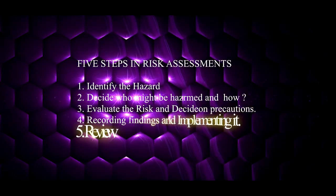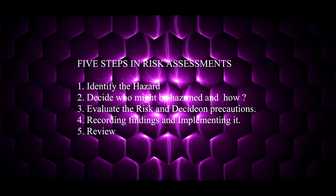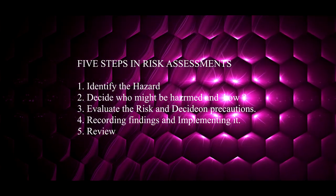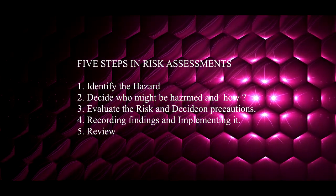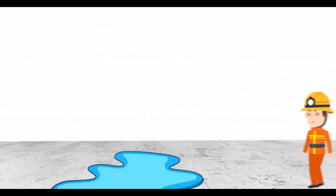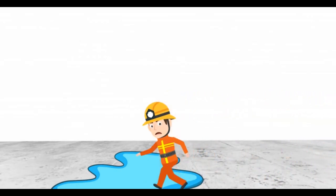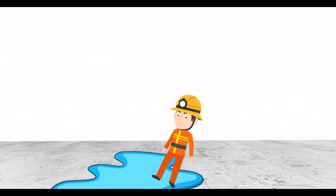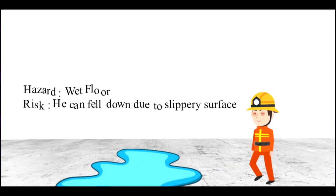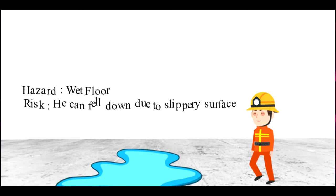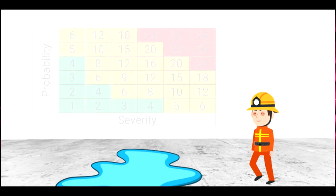Now I hope we have a clear understanding of the basics of hazard identification and risk assessment. Let's do a hazard identification and risk assessment for a simple scenario together. In the scenario, the wet floor is the hazard and the risk is the chance of falling on the same level due to the slippery surface. We have now found the hazard and the potential risk.